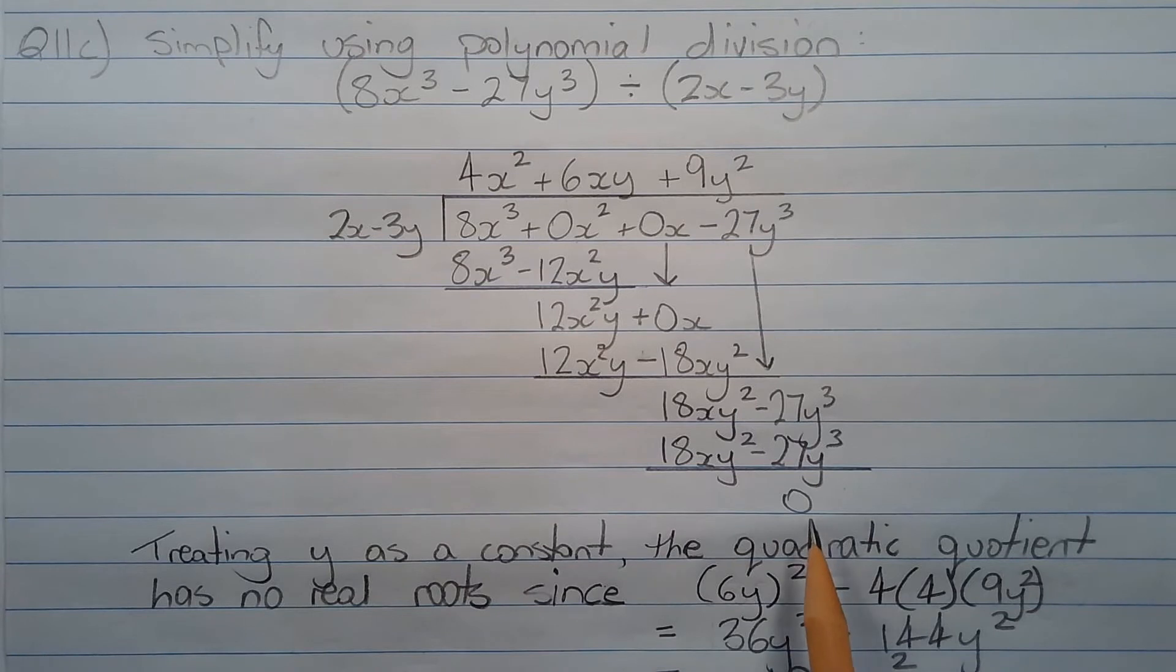You find that we end up with a remainder of 0 and a quotient of 4x squared plus 6xy plus 9y squared.